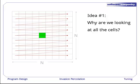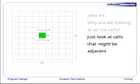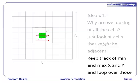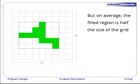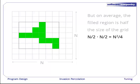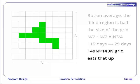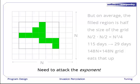So here's an idea. Why are we always looking at all of the cells in the grid? Why don't we just look at the cells that might be adjacent to the filled region? We can keep track of the minimum and maximum x and y coordinates of the area filled so far and just loop over the cells that are one less or one greater on each axis. Well, this isn't going to help us very much. On average, the filled region is about half the size of the grid. So n over 2 times n over 2 is n squared over 4. This means that our 115 day run has been brought down to 29 days. The bad news is that if we go to a grid that's 148n by 148n, we're back to our 115 days again because of that exponent.